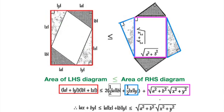From this, we can deduce that the left-hand side diagram, which consists of the parallelogram and four right-angle triangles, has a smaller area than the right-hand side diagram, which consists of the rectangle and the same four right-angle triangles.